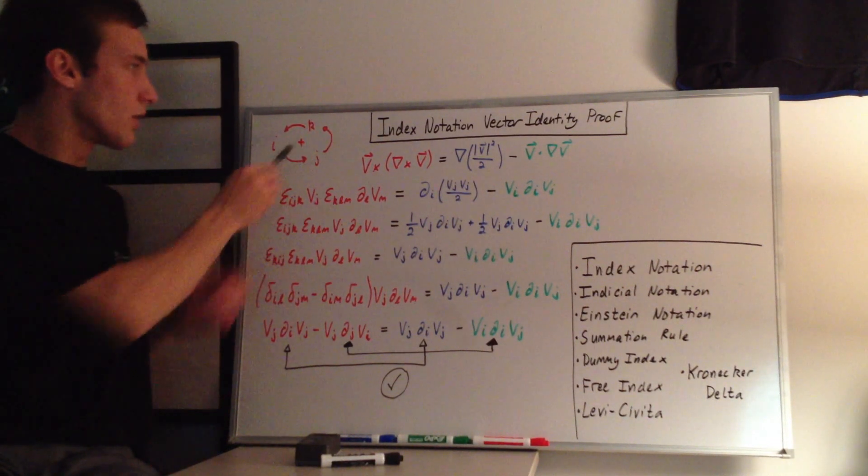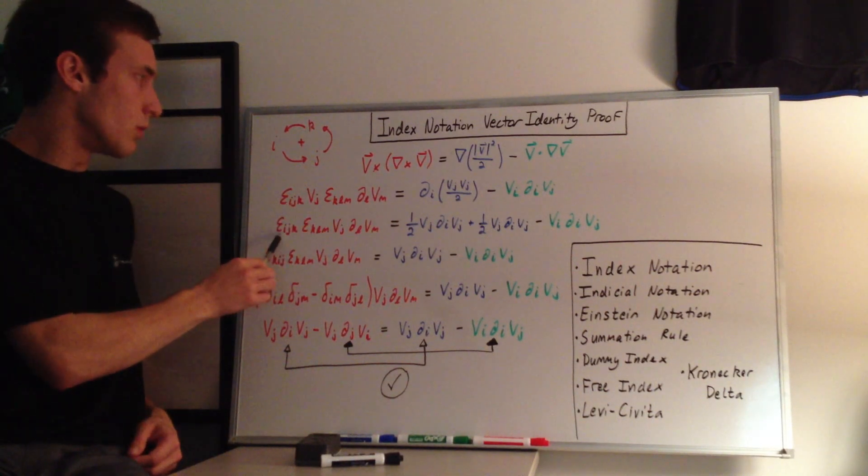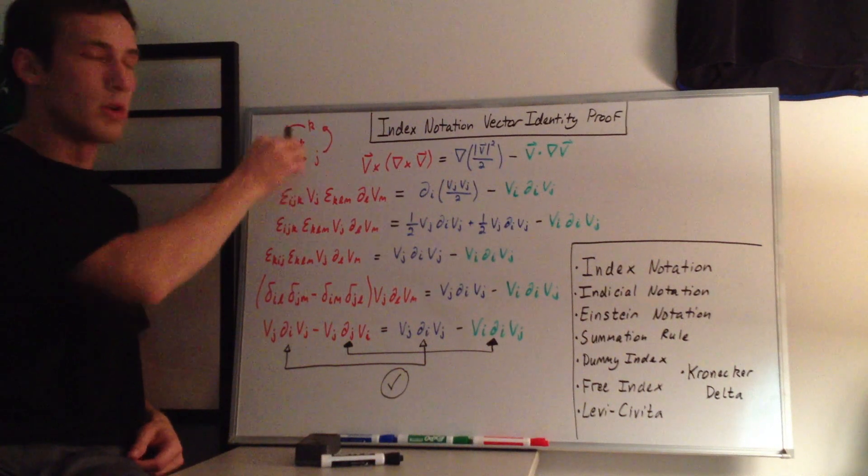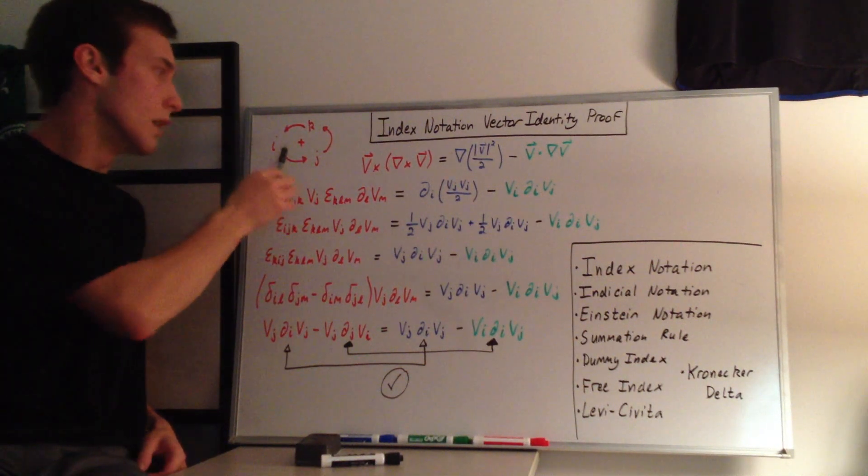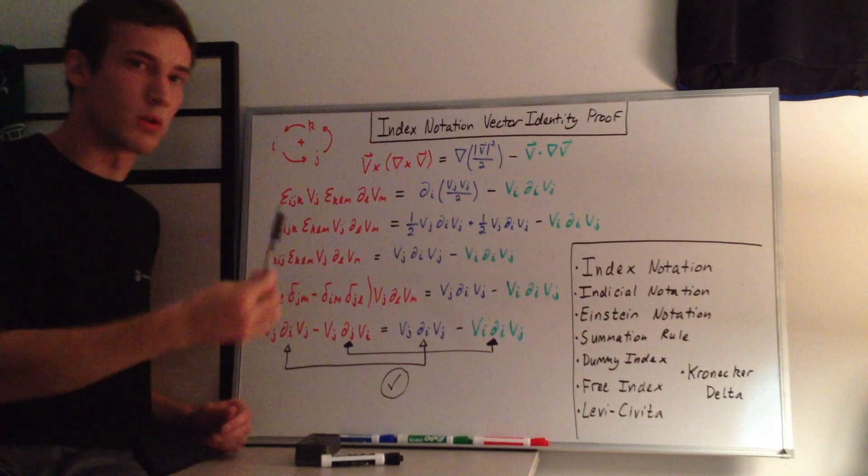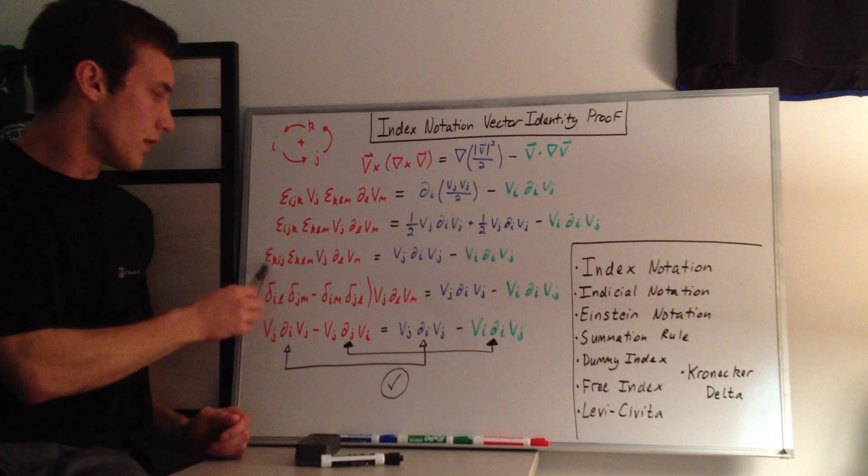If I had moved the j to the front, it would go j, i, k, and that would be going the opposite direction in this circle, which would mean that this would be a negative epsilon_jik. But since we're going in this cyclic manner, then it's still positive.